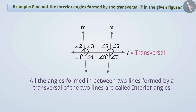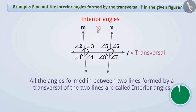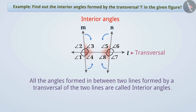Based on this, can you tell the interior angles in this figure? Think for a while. The angles formed by the transversal L between the lines M and N are angle 3, angle 4, angle 5, and angle 8. Therefore, in the given figure, all these angles are interior angles.